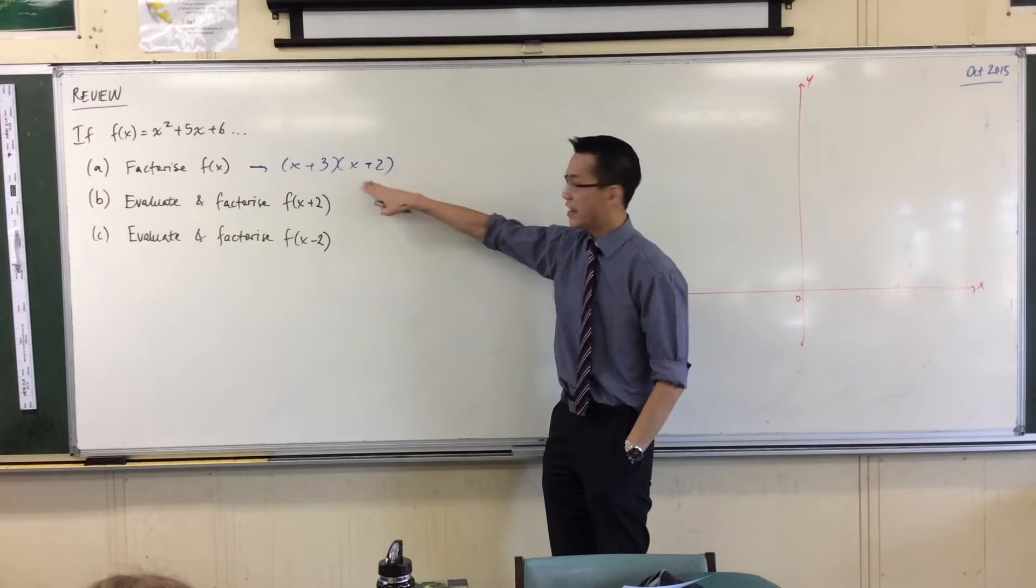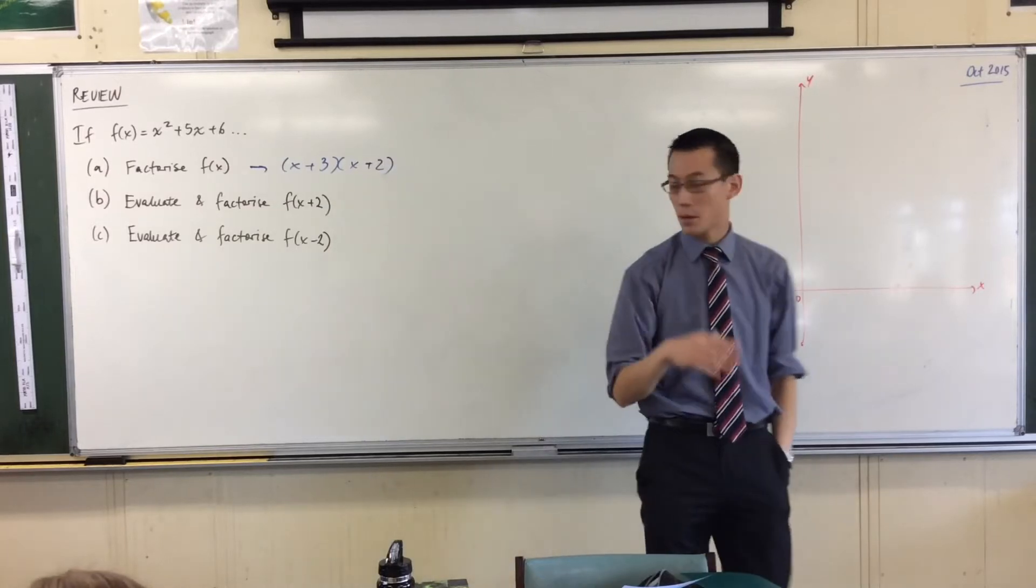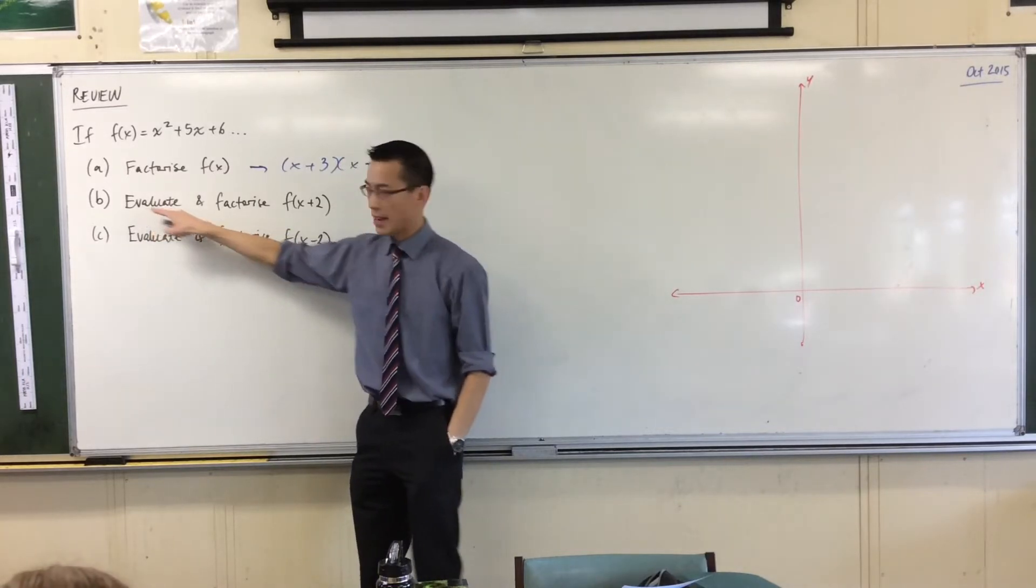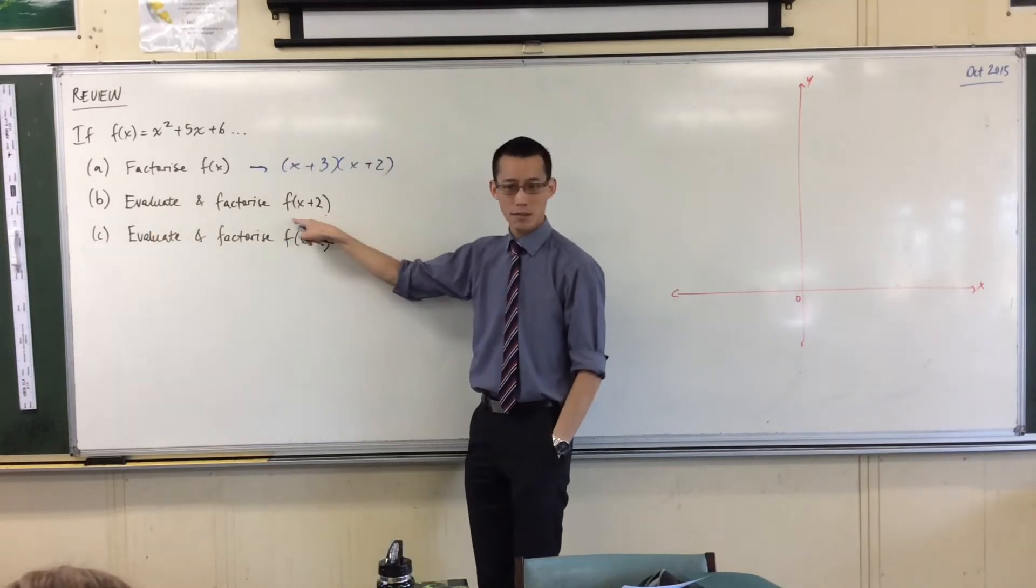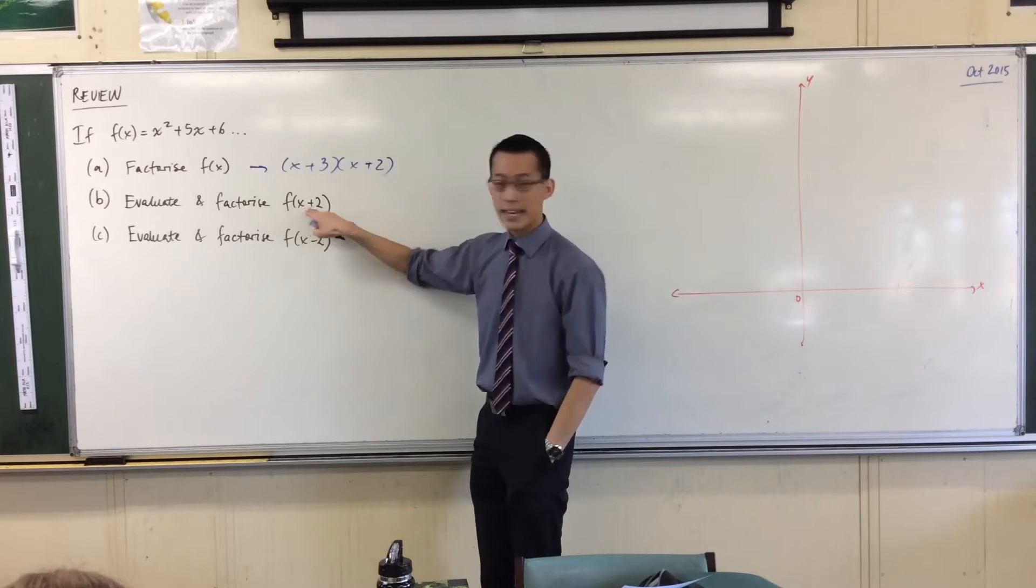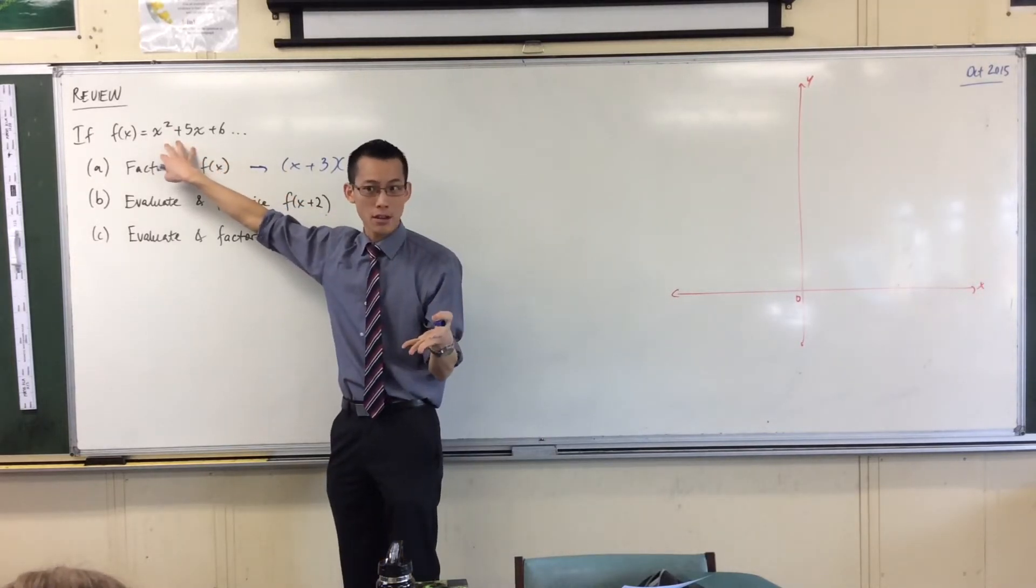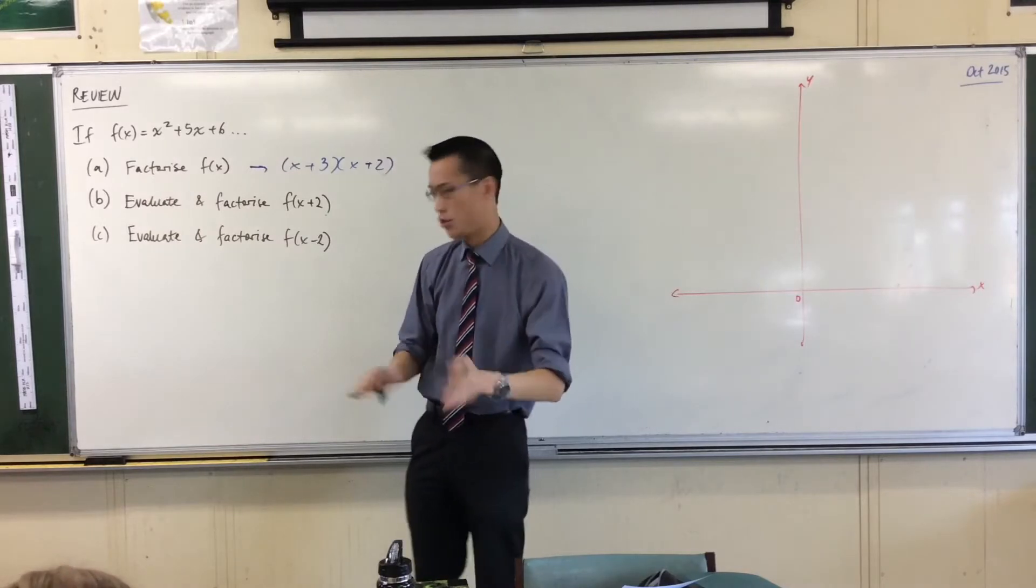Alright, now that's fine. I just want you to keep that in the back of your mind. Let's have a look at B. Now you have to do two things. First, you have to evaluate. So you've seen this function notation before. It means you're going to take X plus 2 and set it, substitute it everywhere you saw X. So this is a fairly straightforward substitution. Let's just give it a go.